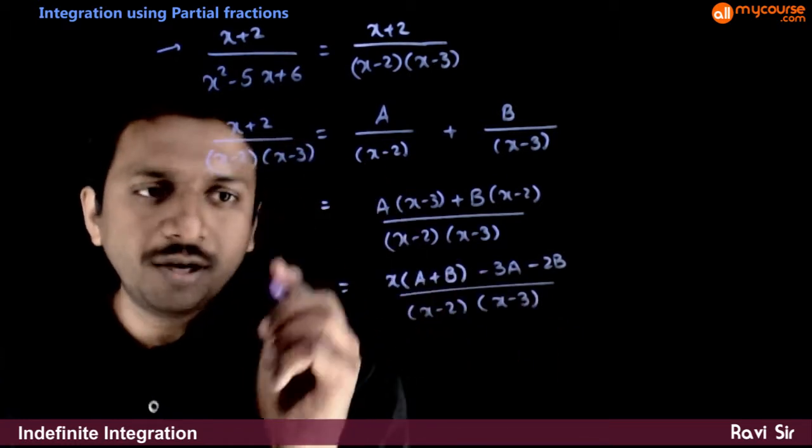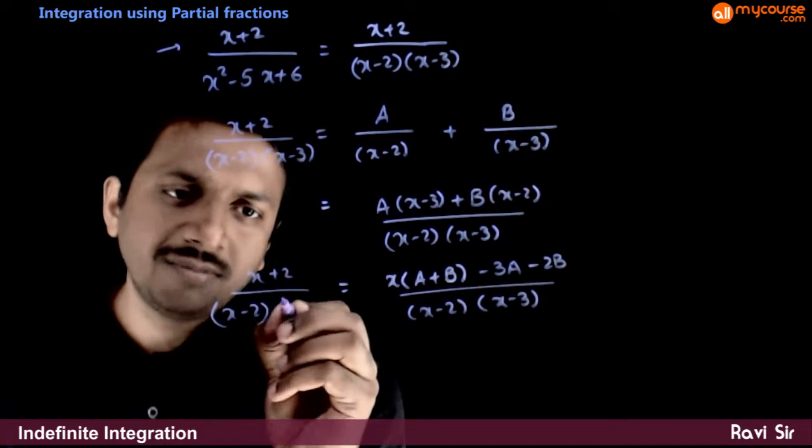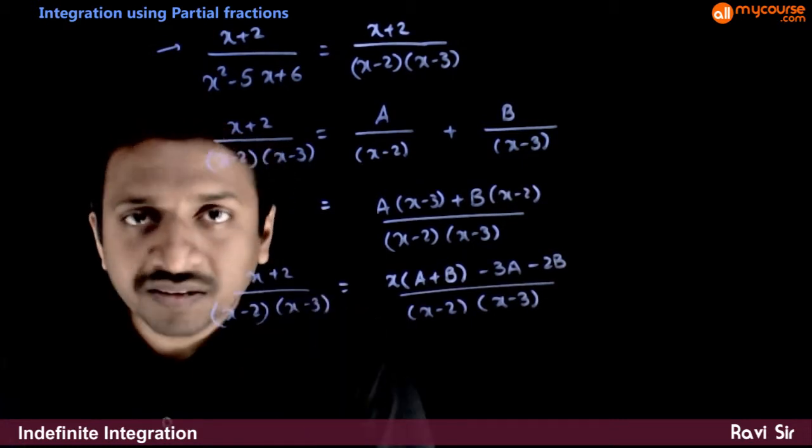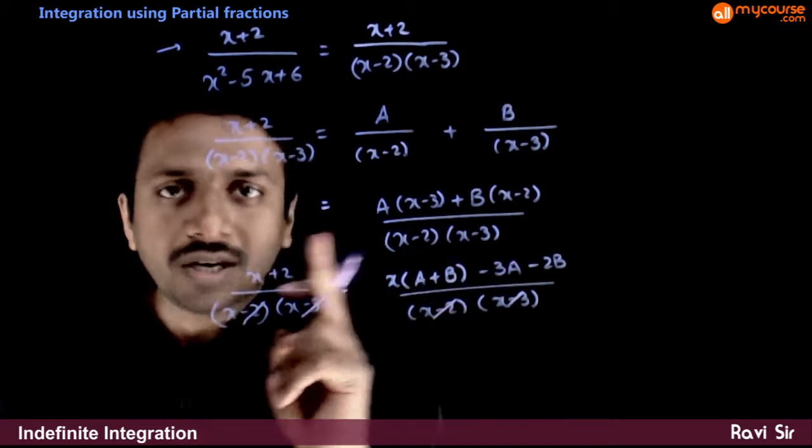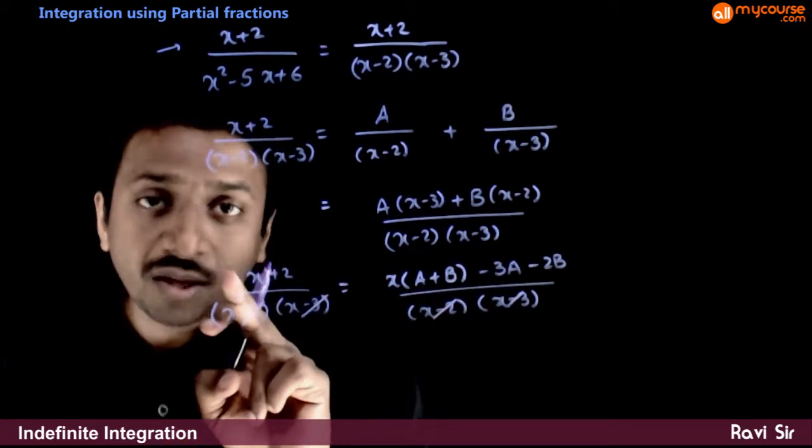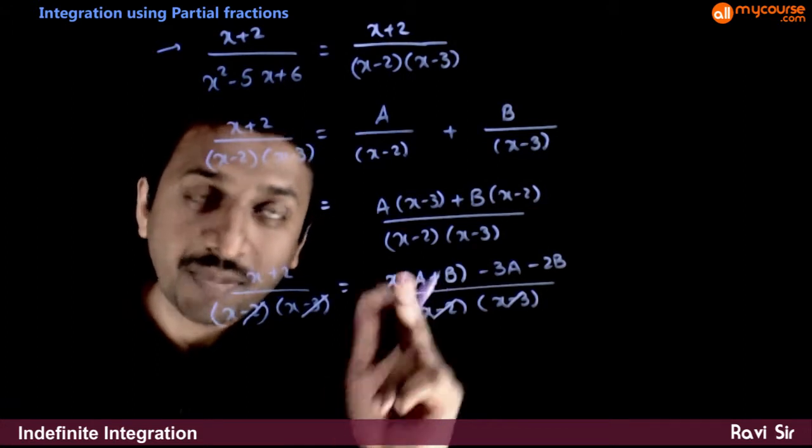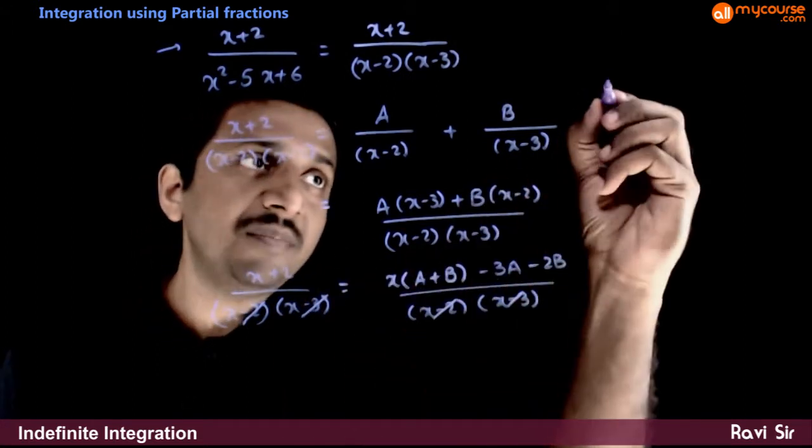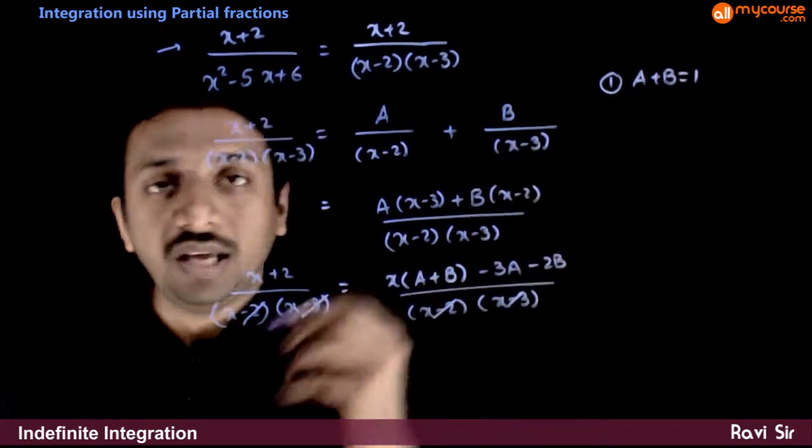Now, this has to be equal to x plus 2 by x minus 2 times x minus 3. If these two have to be equal, the denominators are same. The numerator should also be same. Here the coefficient of x is 1. Here the coefficient of x is a plus b. For these two to be same, the first condition is that a plus b has to be equal to 1.